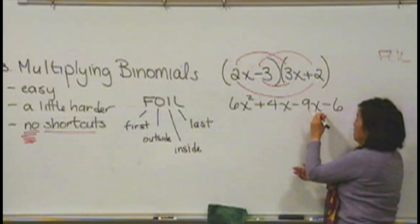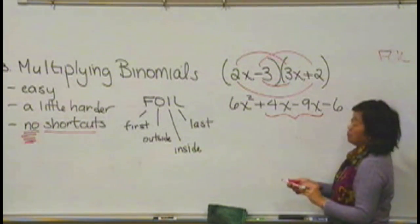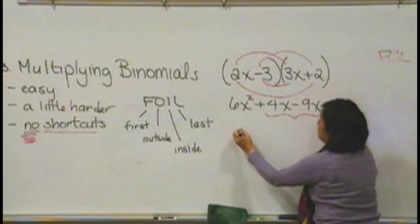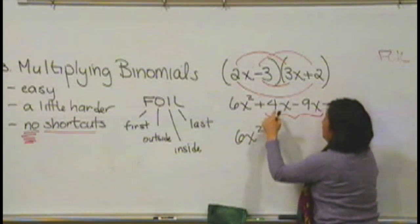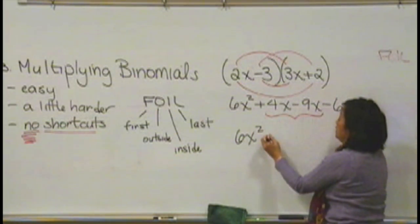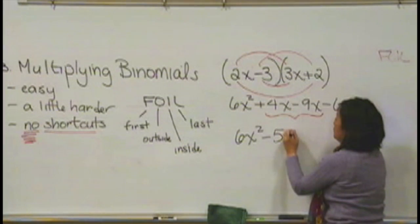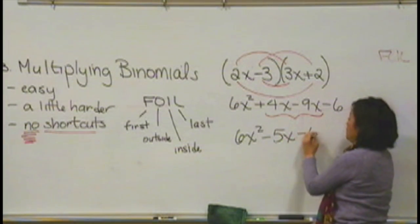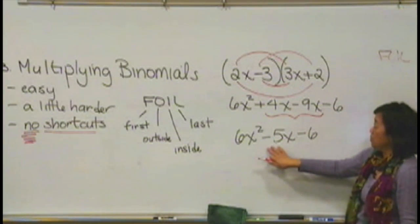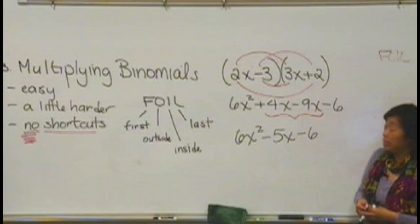And then notice that, again, these two here, we can combine together. So, we're going to have 6x squared, 4x minus 9x is negative 5x, and here we have a negative 6. So, our answer would be 6x squared minus 5x minus 6.